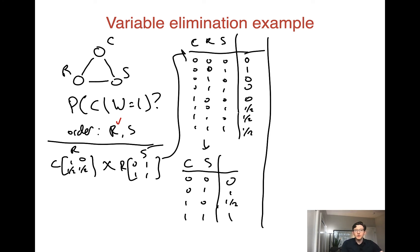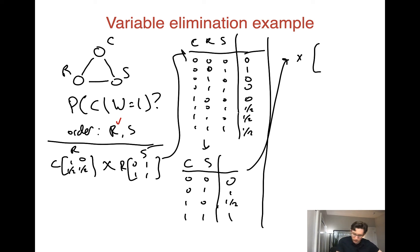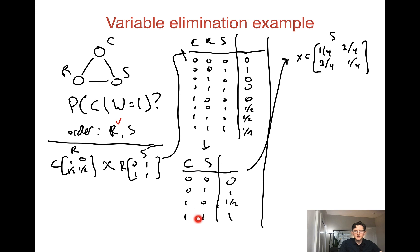Now we have to eliminate S. To eliminate S, we have two factors involving S: the factor over C and S we just created, and the original factor over C and S from the sprinkler CPT, which has values (C=0, S=0)→1/4, (C=0, S=1)→3/4, (C=1, S=0)→3/4, (C=1, S=1)→1/4. Note we can go back and forth between the one-dimensional and two-dimensional table representations for any factor over two variables.